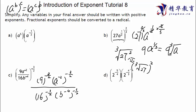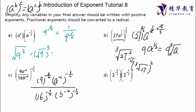Let's use a different color. For 9 to the power of negative three over two: change it to 1 over 9 to the three over two. Nine to the three over two means square root of 9 cubed — square root of 9 is 3, and 3 cubed is 27. So this term equals 1 over 27.